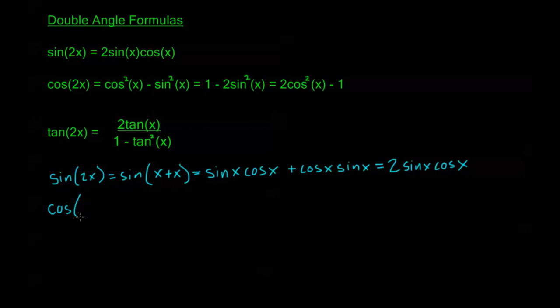The cosine double angle formula we get in a very similar way using the cosine addition formula. The cosine addition formula gives us cosine x cosine x minus sine x sine x. Simplifying this out, I have cosine squared x minus sine squared x.